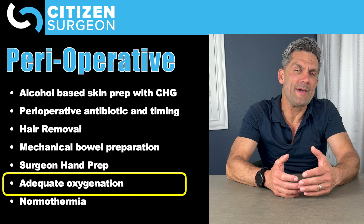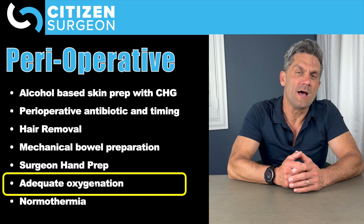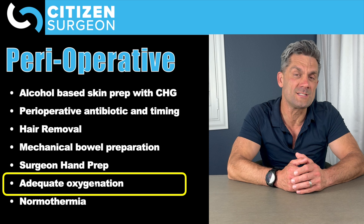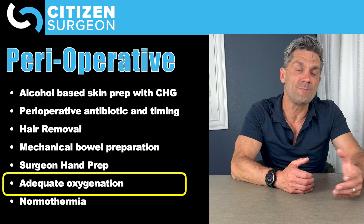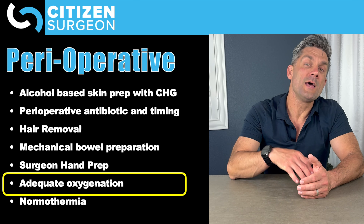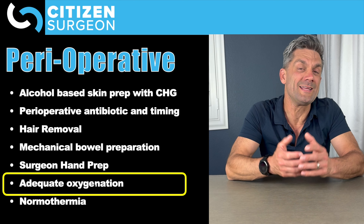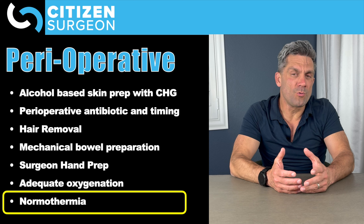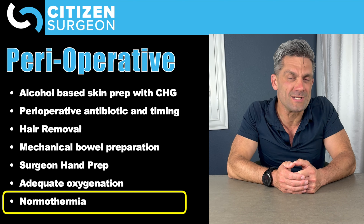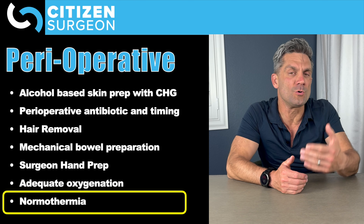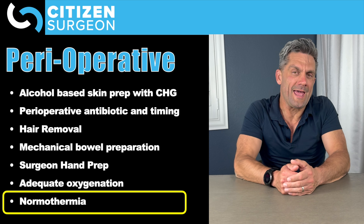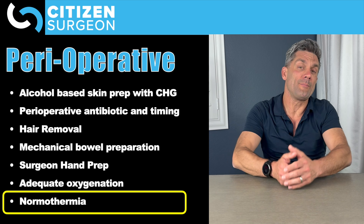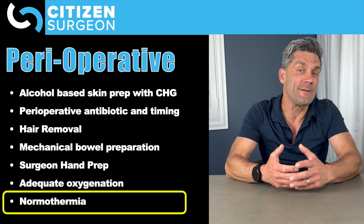The next perioperative strategy is mechanical bowel preparation. This is a combination of an oral medication — for example, polyethylene glycol, perhaps with senna — given before the operation to clean out the colon. We don't need mechanical bowel prep for every operation, but for colorectal operations, mechanical bowel prep combined with preoperative antibiotics decreases the risk of surgical site infection.